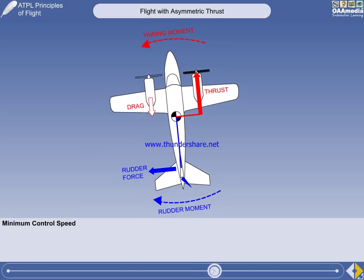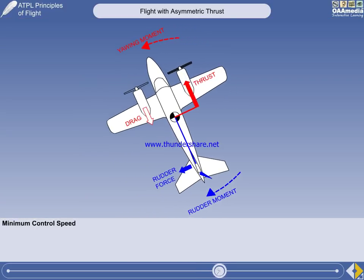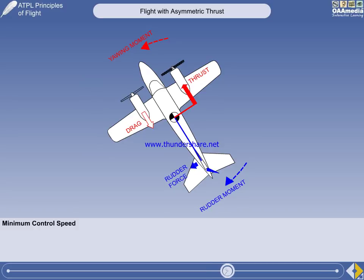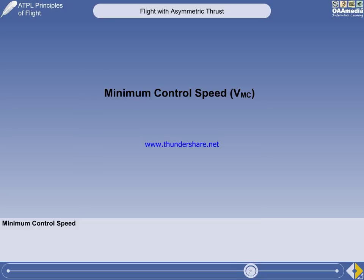In these extreme circumstances, the only way to regain control would be to minimise thrust on the live engine or engines, to remove the yawing moment, and permit a controlled forced landing. Thus, there is a minimum IAS at which directional control can be maintained under a given set of conditions after engine failure in a multi-engine aircraft. This minimum speed, which will vary with temperature and density, is called VMC — minimum control speed.